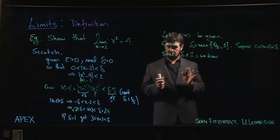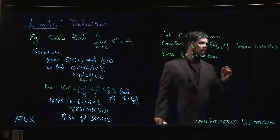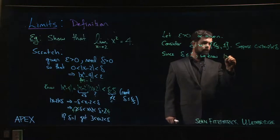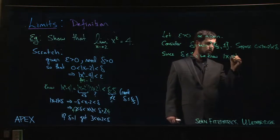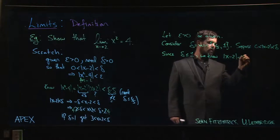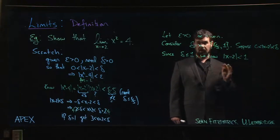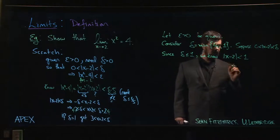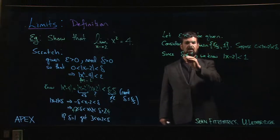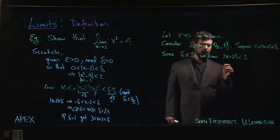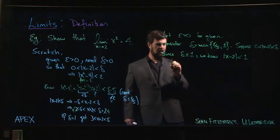that means we know that x - 2 has to be less than 1 in absolute value, because it's less than delta, and delta is less than or equal to 1. Well, what does that tell me?